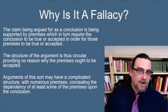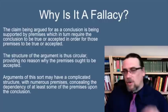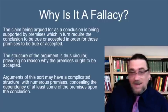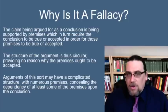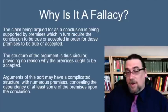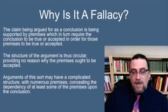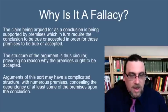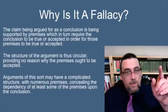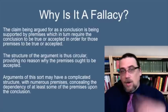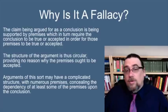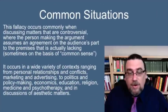The structure is circular, providing no reason why you should accept the premises in the first place. If you can't get somebody to accept the premises, they won't accept the conclusion. This could also be called 'preaching to the choir.' Arguments of this sort can sometimes have a complicated structure which conceals the fact that some premises are dependent upon the conclusion — all it takes is for one premise to be dependent in some way on the conclusion.